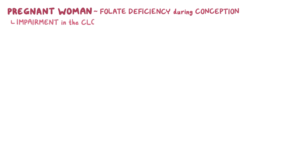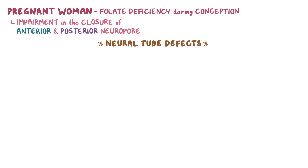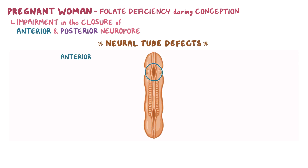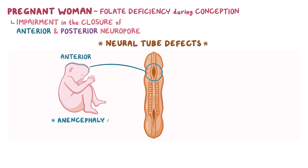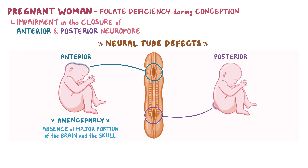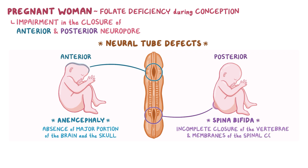Lastly, when pregnant women suffer from folate deficiency around the time of conception, embryos may not properly develop the neural tube due to impairment in the closure of anterior and posterior neuropore of the neural tube, which may lead to neural tube defects. So when the anterior neuropore doesn't close properly, the baby may be born with anencephaly, or absence of a major portion of the brain and the skull. Similarly, if the posterior neuropore doesn't close well, the baby may be born with spina bifida, or incomplete closure of the vertebrae and membranes of the spinal cord.